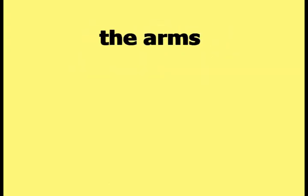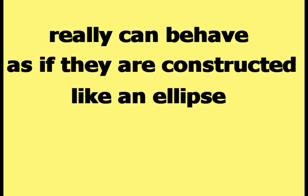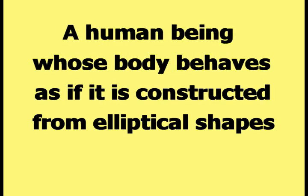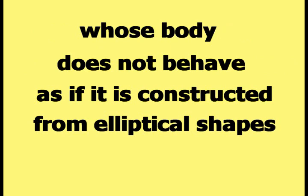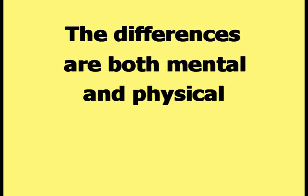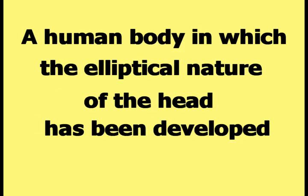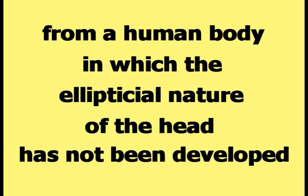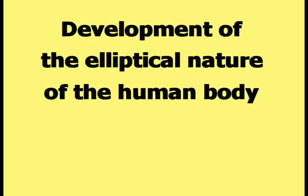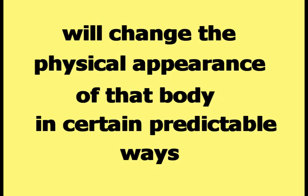According to happy theory, the arms, the legs, the torso, and the head of the human body really can behave as if they are constructed like an ellipse. A human being whose body behaves as if it is constructed from elliptical shapes will be different — both mentally and physically — from one whose body does not. A human body in which the elliptical nature of the head has been developed will think differently and have a different personality, and development of the elliptical nature of the human body will change the physical appearance in certain predictable ways.